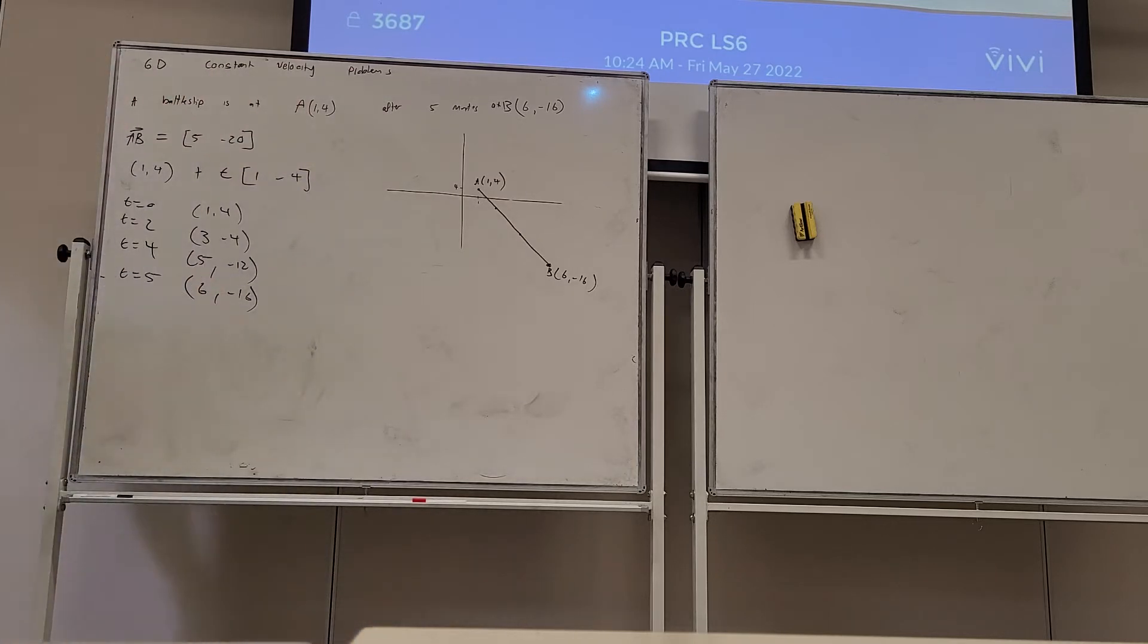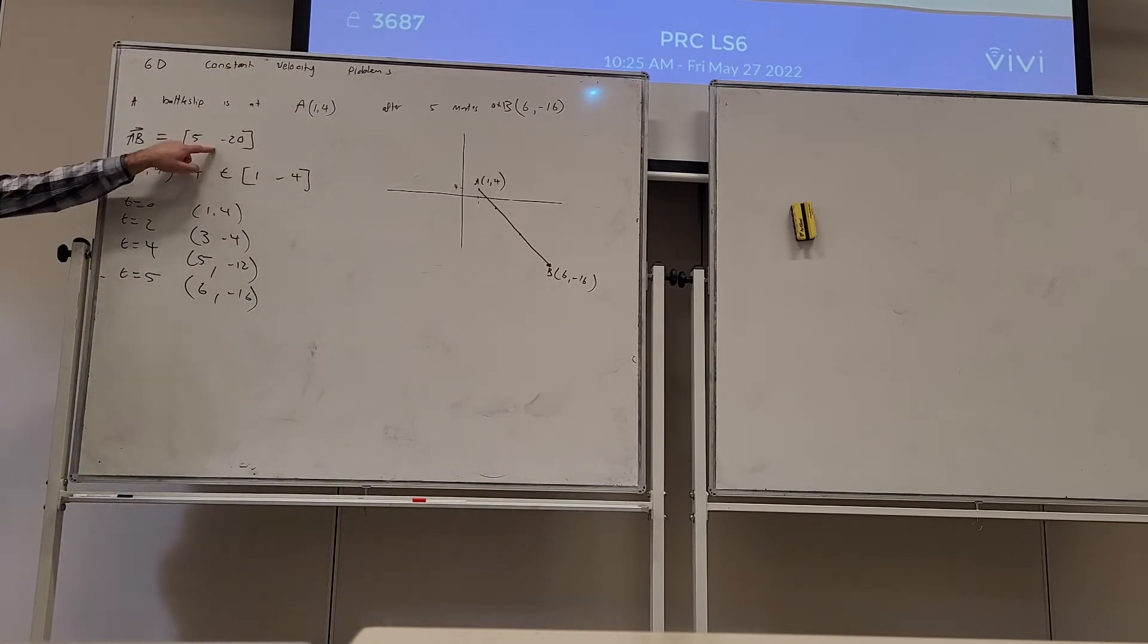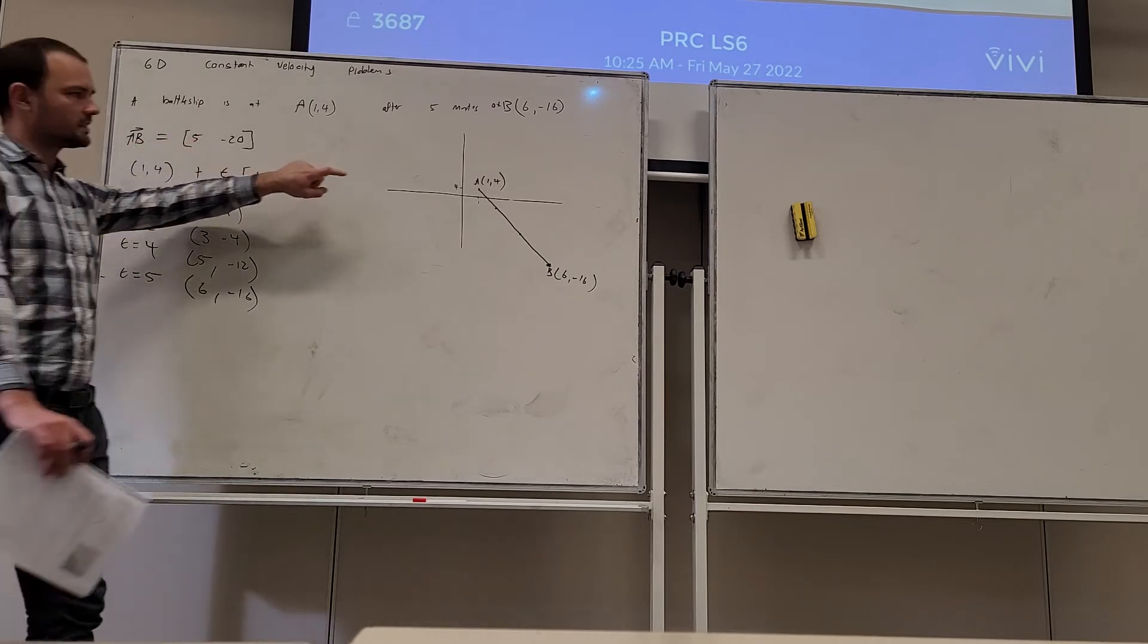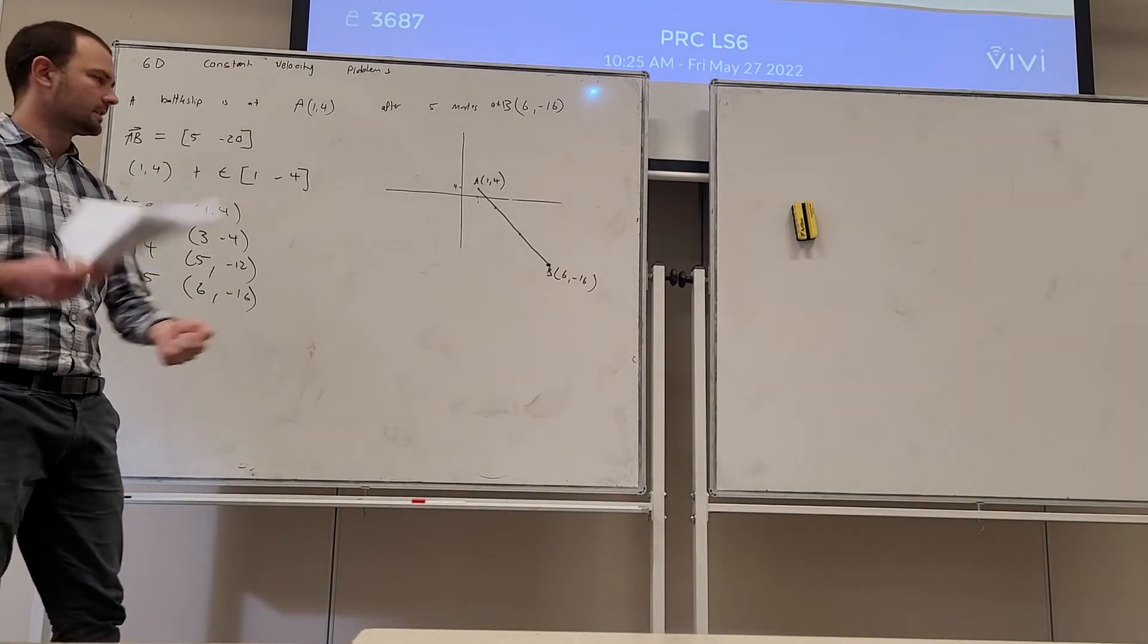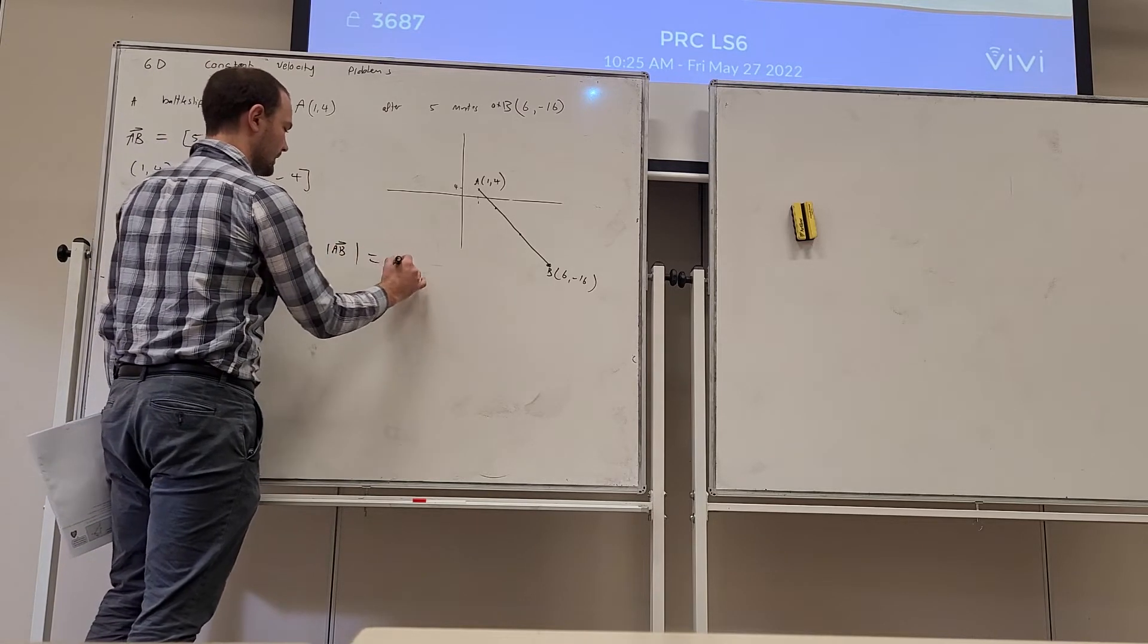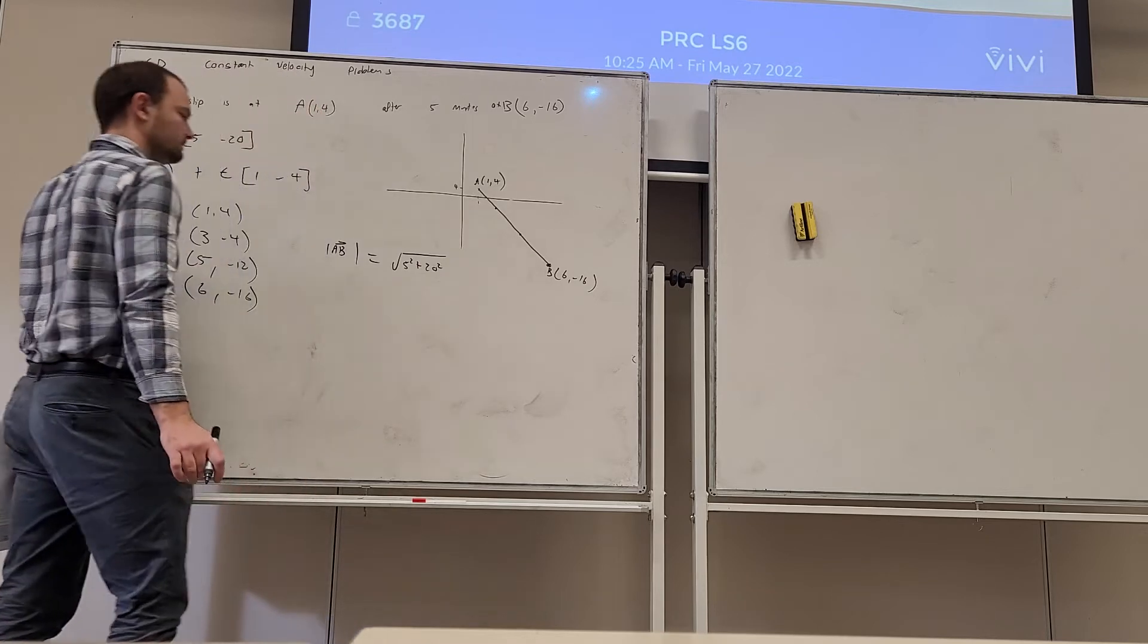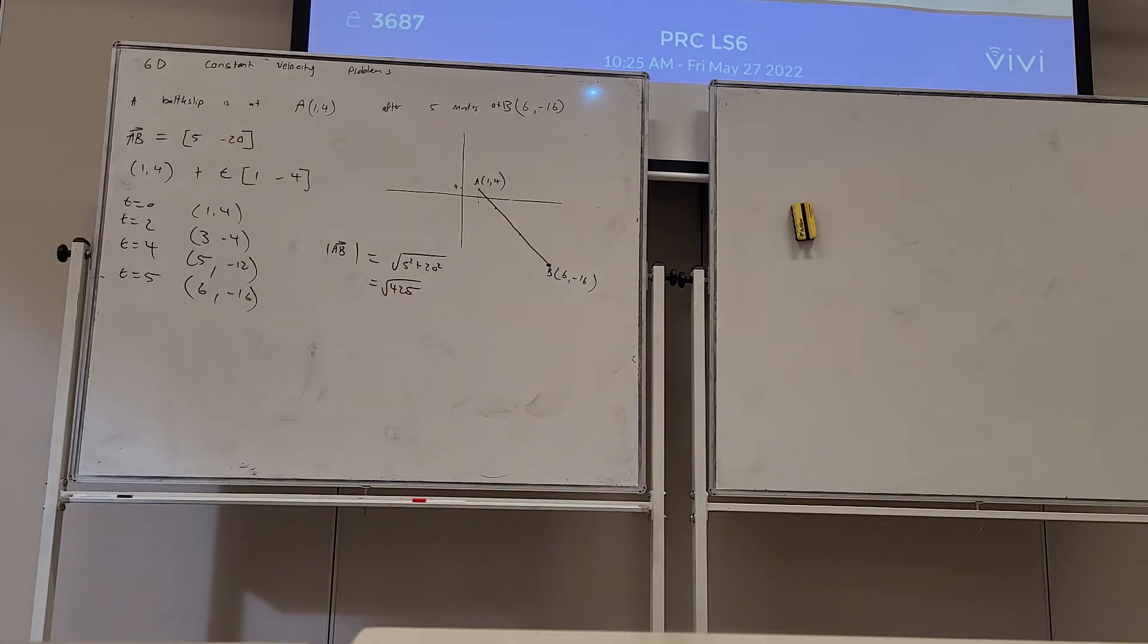Find the speed of the battleship given each grid unit is 1 kilometer, and there's a couple of ways we could do this. Now we know the vector from A to B is this vector here, so if we're going to find the modulus of that, the distance between those two, that's how far it's traveled in 5 minutes and then we can just divide it by 5 to work out what's its velocity. That's a pretty intuitive way of doing it. So let's do that. So we've got the vector AB. So let's say what's the modulus of AB? That's the square root of 5 squared plus 20 squared, which is the square root of 425.